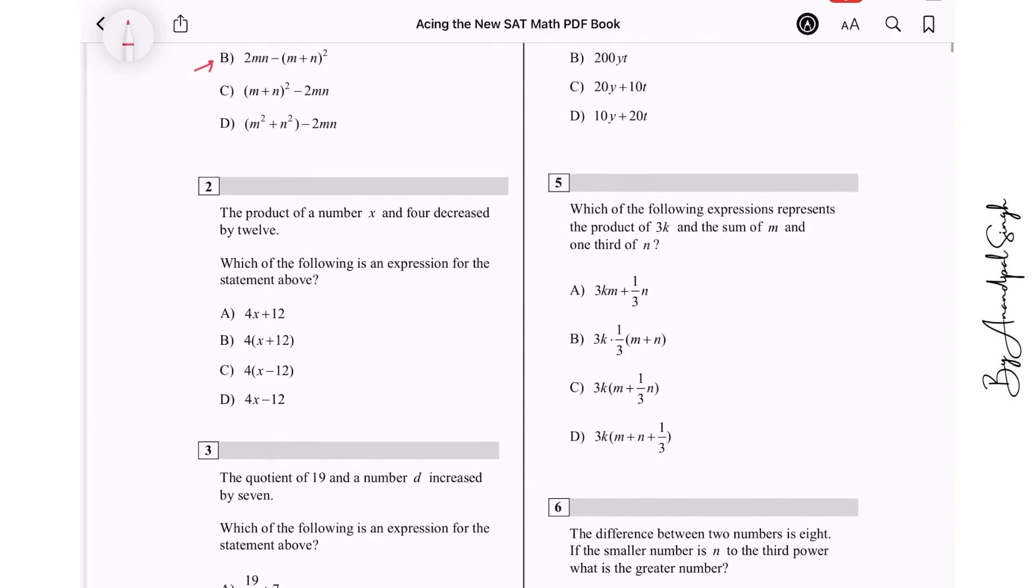The product of a number X and 4 means 4 times X, decreased by 12, so negative 12. The answer is D.